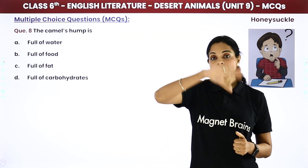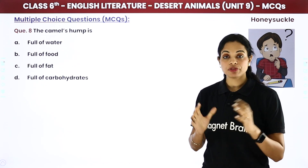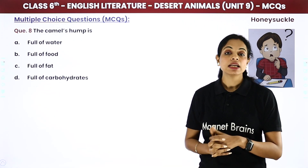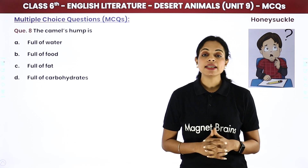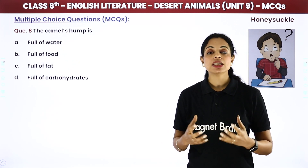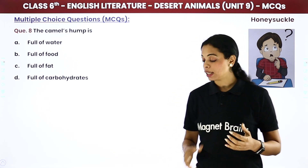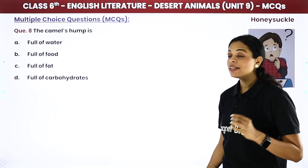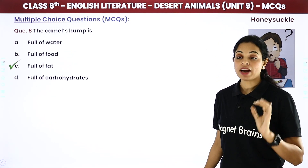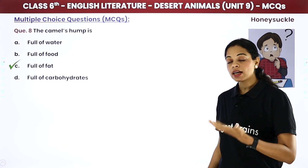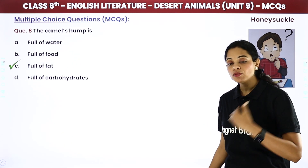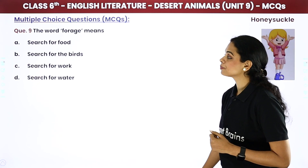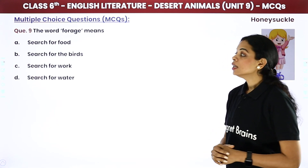The camel's hump — यह जो camel का hump होता है, वो क्या होता है? Options: full of water, full of food, full of fat, or full of carbohydrates. The answer is: it is full of fat. Energy के लिए fat और carbohydrate चाहिए — camel का hump totally full of fat होता है, इसलिए वो जब बहुत दिन तक खाना नहीं खाता, tab bhi survive कर सकता है।